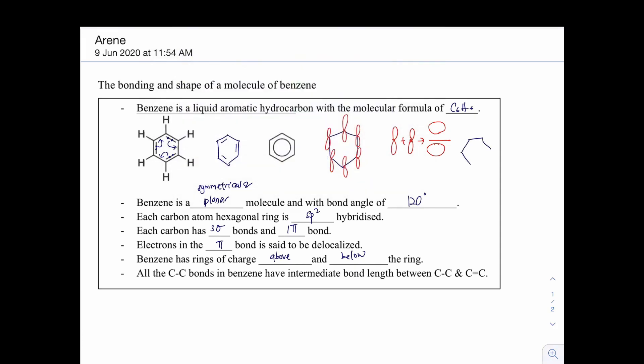Hence, you will have a situation like this. This is the benzene ring. And on top of the ring, there is electron cloud, and below the ring, there is also electron cloud. So electron clouds are constantly moving around above and below the ring.